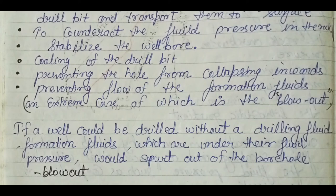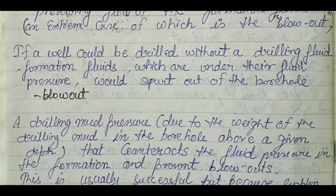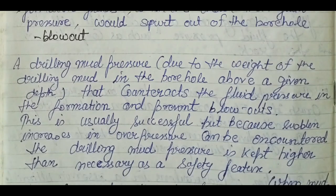If there is no drilling mud, the formation fluid will collapse into the wellbore — this situation is called a blowout. We always use drilling mud to prevent blowout. The drilling mud pressure, due to the weight of the drilling mud in the borehole at a given depth, counteracts the fluid pressure in the formation and prevents blowout. The mud pressure is always kept slightly higher than the formation fluid pressure.